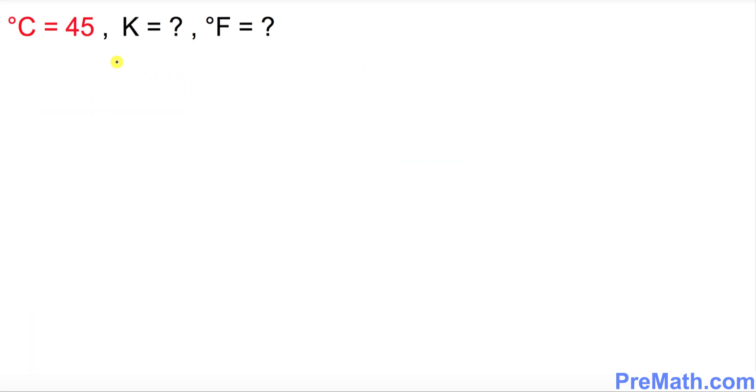In this next problem, we have been given C equals 45, and we want to figure out K and F. In the very first step, we're going to convert from degrees Celsius to K, and this is the formula that we will be using.